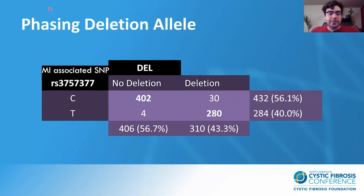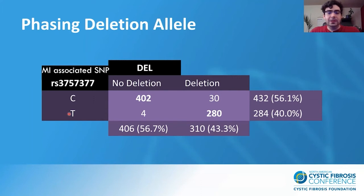We can phase our MI-associated SNPs with respect to the 20KB deletion using 10X Genomics reads. Here we show the top MI-associated SNP with RS ID 3757377. The MI risk allele T is observed in our samples at a frequency of 40%, and likewise the deletion is observed at 43% — for 716 haplotypes. We see the risk allele T is almost always found on the same haplotype as the deletion, and the C allele is almost exclusively found with the no-deletion allele. If the deletion has a causal effect, this type of imperfect linkage could explain why the MI GWAS did not hit full genome-wide significance.